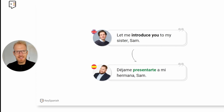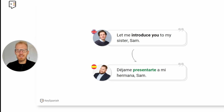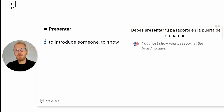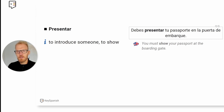'Déjame presentarte a mi hermana.' Many students confuse 'introducir' and 'presentar' because in English you would say 'to introduce someone,' but the right verb is 'presentar.' It's not only to introduce someone — it can also mean to show or to give a presentation, among other things. We are just looking at the main meanings that cause confusion. So you can also say 'debes presentar tu pasaporte en la puerta de embarque' — you must show your passport at the boarding gate.